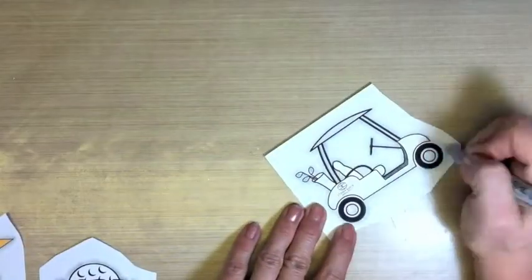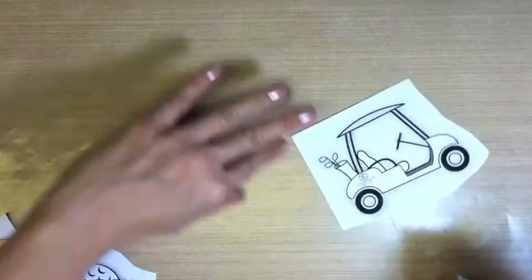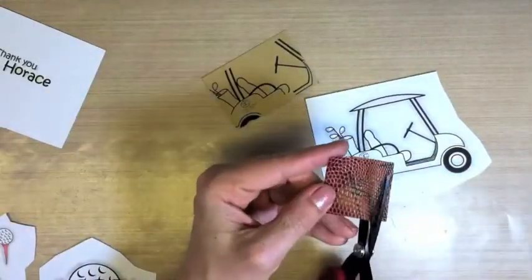Now we'll do some metallic accents with the sharpie silver marker on the golf clubs and the little hubcaps on our golf cart.